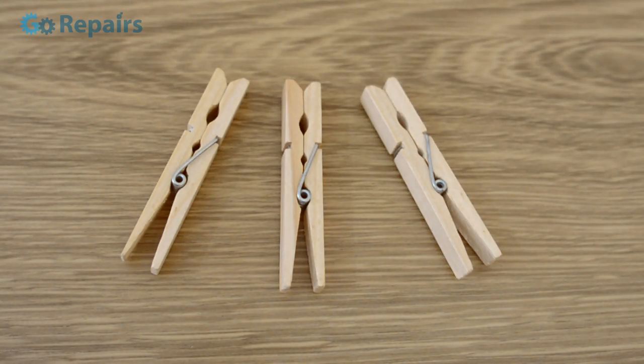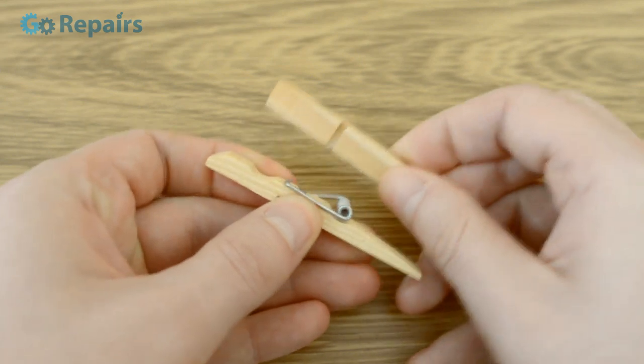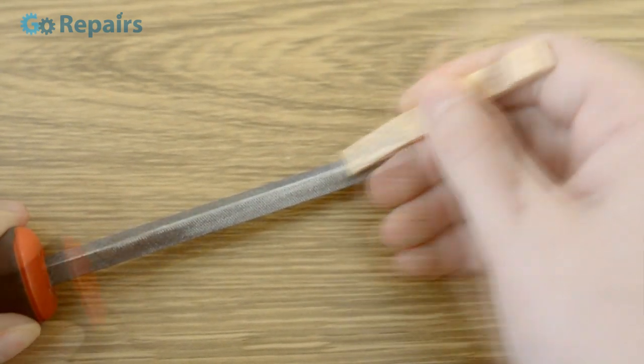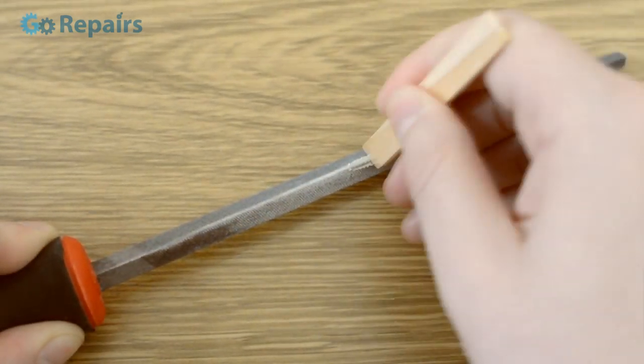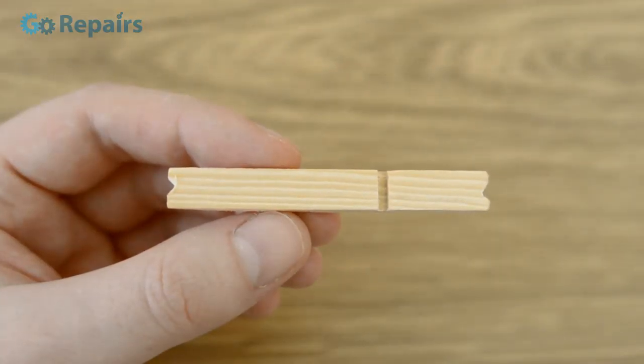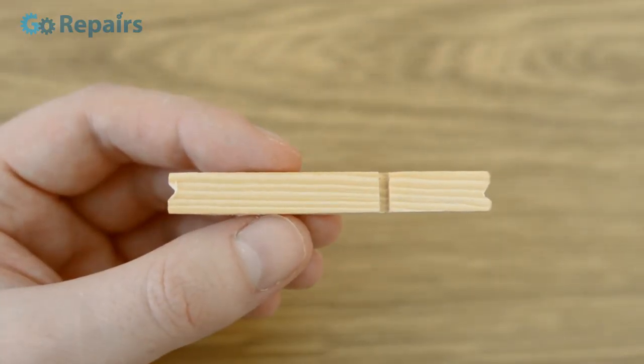You're going to need three wooden clothespins for this build. Start by taking one of your pegs apart as shown and notch either end. This is going to act as a guide for our rubber bands and help prevent it from coming off.